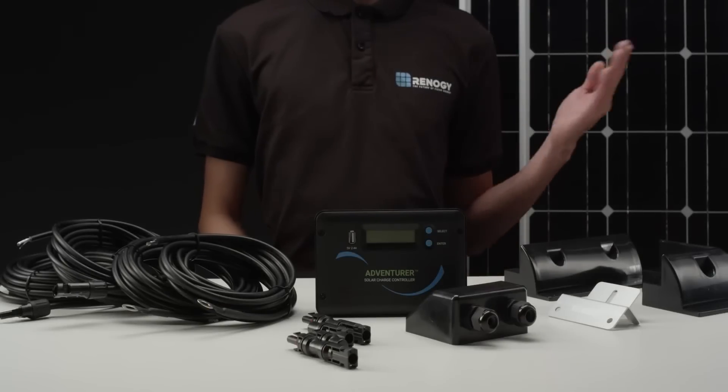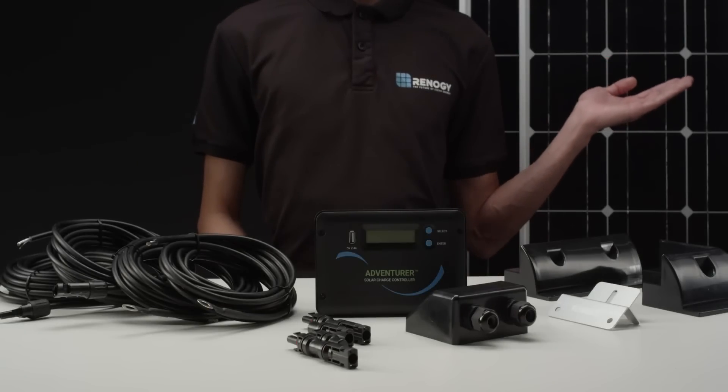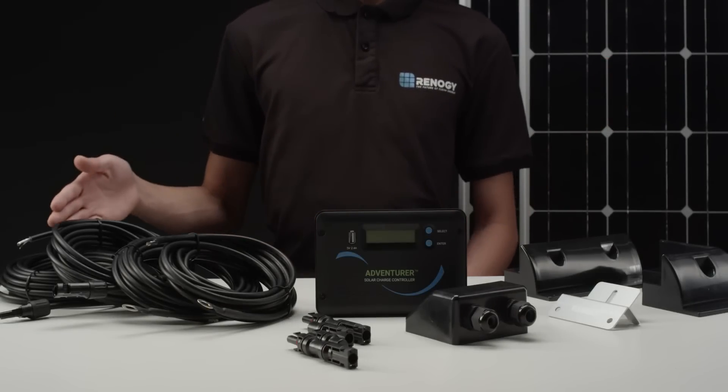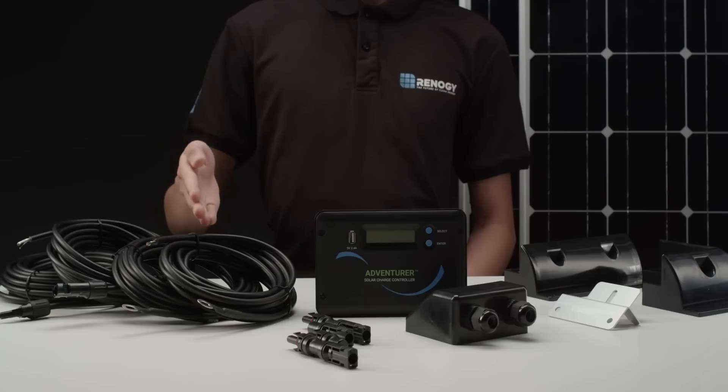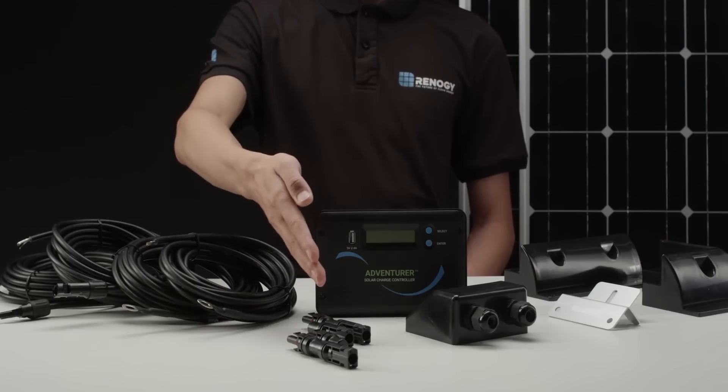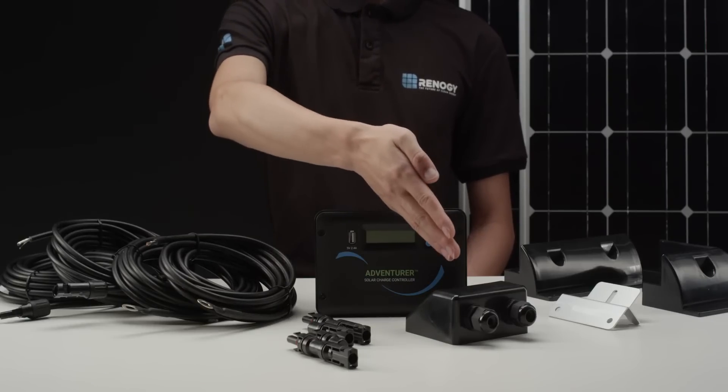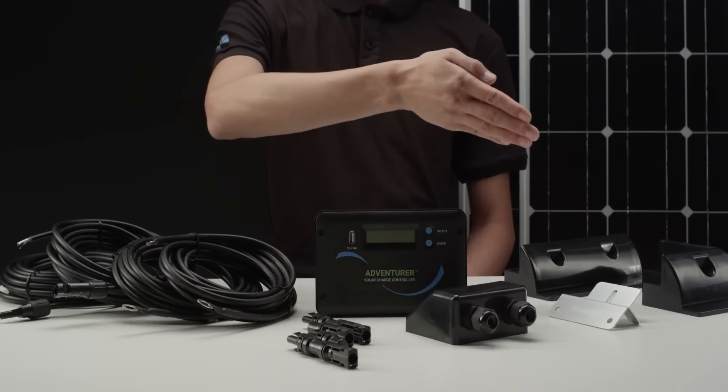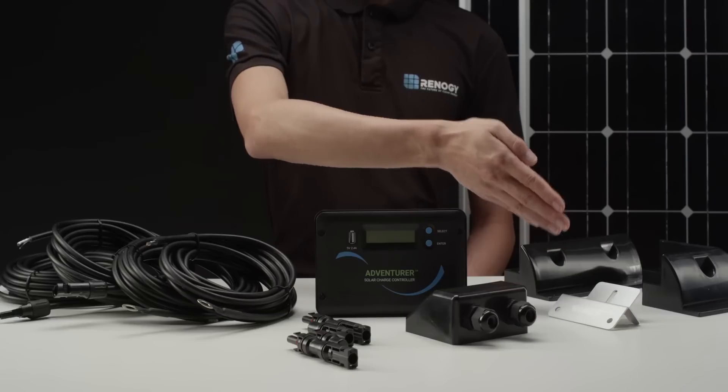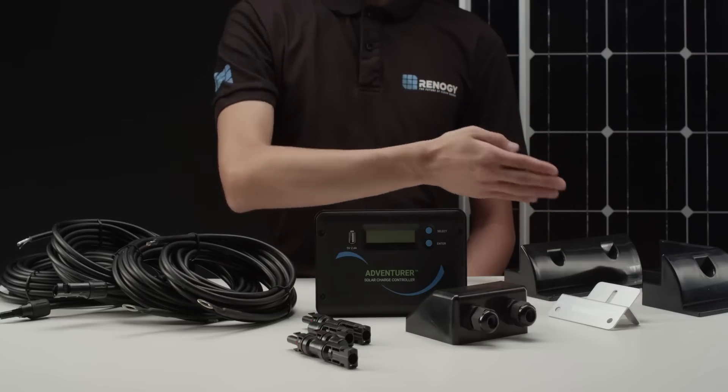The kit contains two 100 watt solar panels, a 30 foot adapter kit, a 16 foot tray cable, a set of MC4 branch connectors, a 30 amp adventurer charge controller, a cable entry housing, and you have the option of choosing either two mounting Z brackets or two corner bracket mounts.